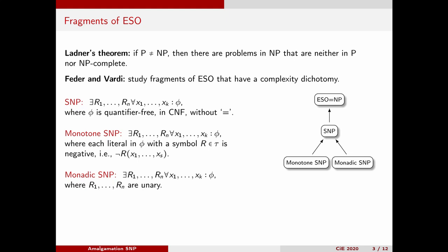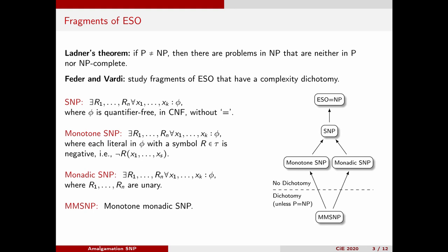And finally, Feder and Vardi also considered the class monadic SNP, which consists of those SNP sentences where all existentially quantified relation symbols are unary. Even though these restrictions appear to be quite restrictive, Feder and Vardi managed to prove that every problem in NP is polynomial time equivalent to a problem in monotone SNP and to a problem in monadic SNP. So both of these fragments do not have a complexity dichotomy. However, if we impose both restrictions simultaneously, we obtain a fragment called MMSNP — monotone monadic SNP — and for this class, Feder and Vardi conjectured that there is a complexity dichotomy.